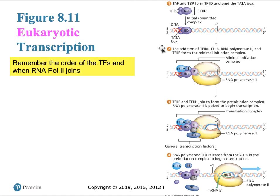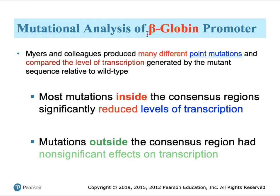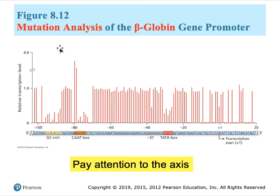Figure 8.11 sequentially depicts the order in which these events take place. Once all transcription factors and RNA polymerase II have bound to the promoter, initiation of RNA transcription takes place when factor IIH and a couple of other proteins disassociate, permitting RNA polymerase to begin transcription. Research on genes such as the beta-globin promoter has revealed that mutations inside the consensus regions significantly reduced transcription levels, whereas those outside those regions had little or no effect, as illustrated in figure 8.12.